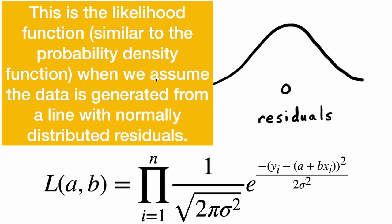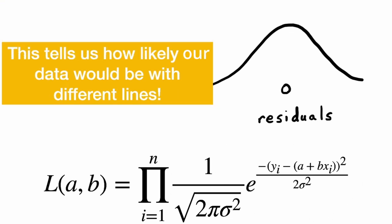which is similar to the probability density function when we assume the data is generated from a line with normally distributed residuals. This is the probability density function of a normal distribution. This tells us how likely our data would be with different lines.